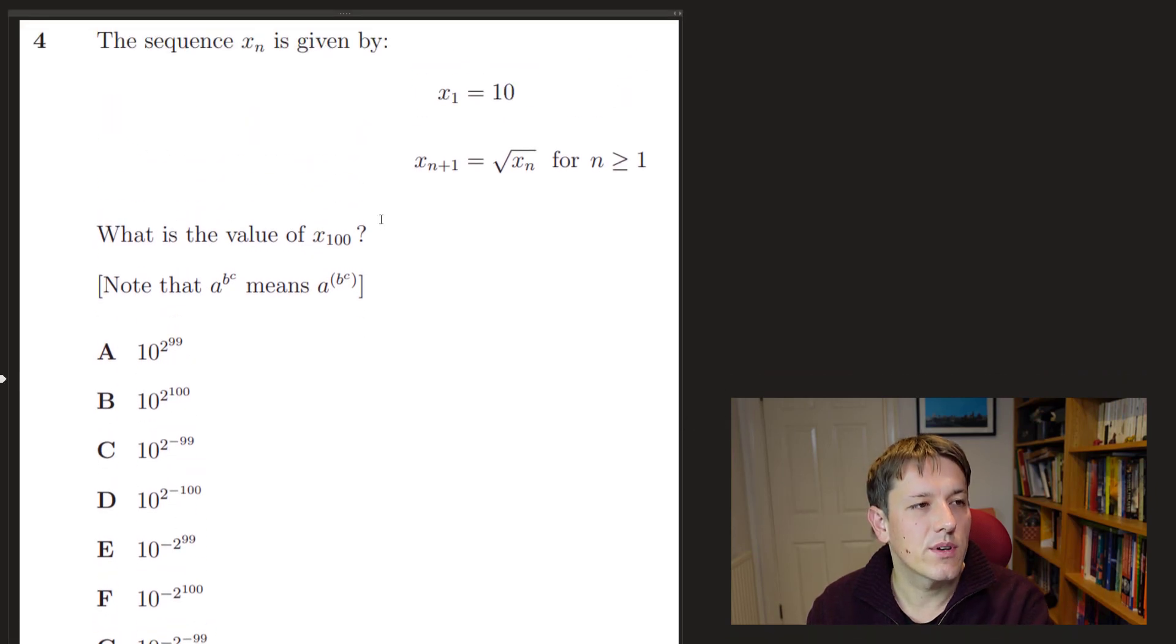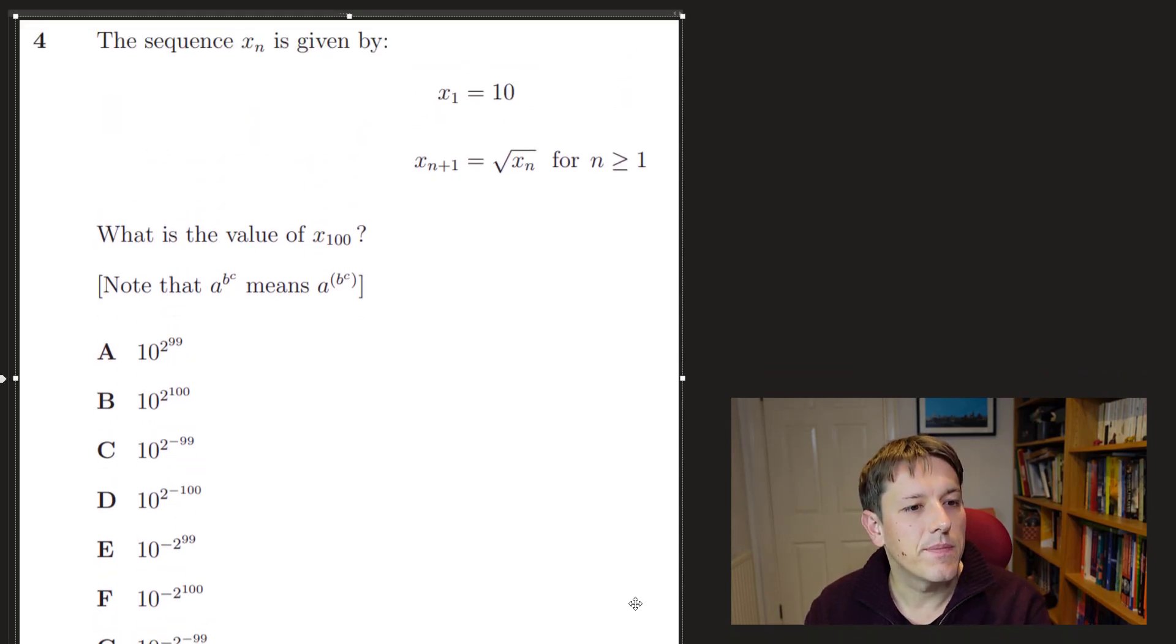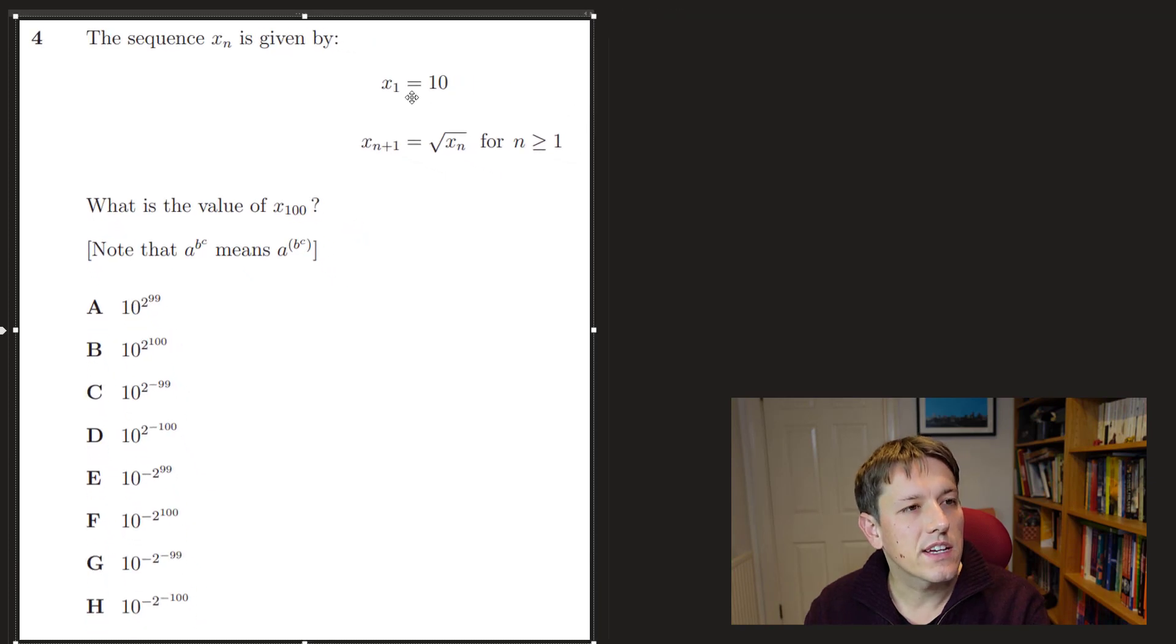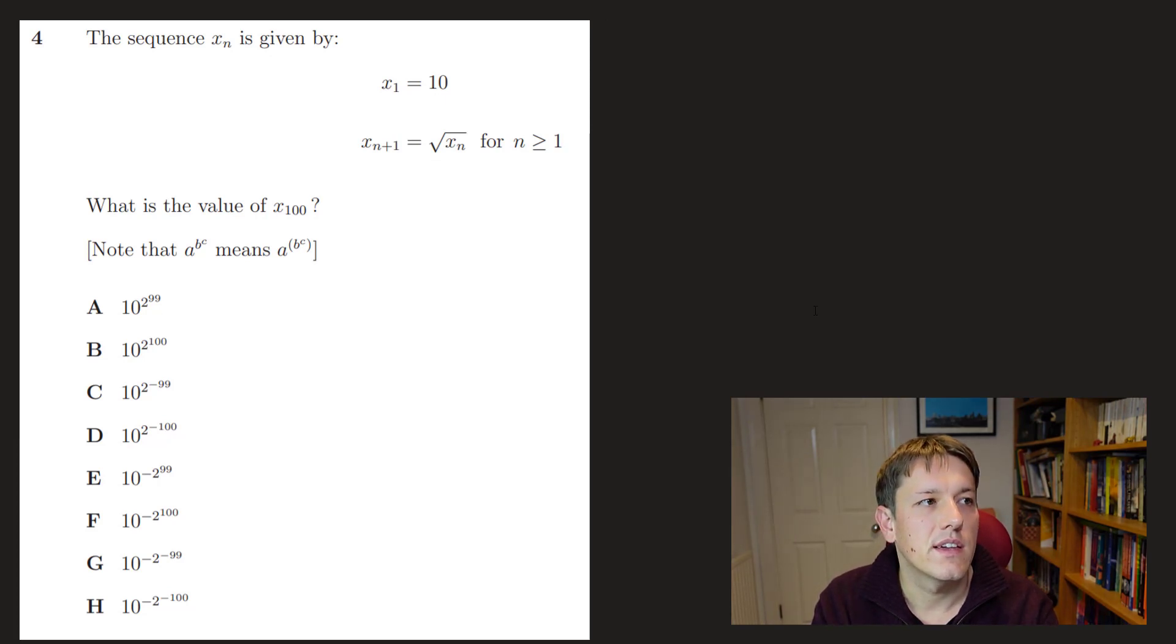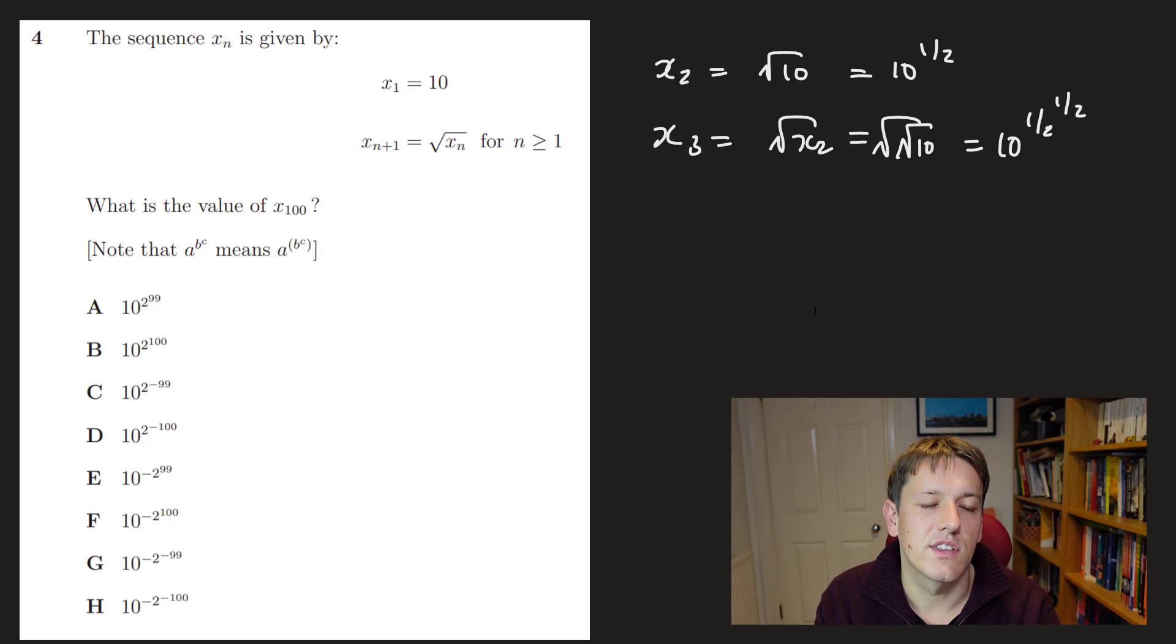In question 4, it says the sequence is given by x₁ = 10 and x_{n+1} is the square root of x_n. So we're going to have here x₂ is the square root of 10, which I could write as 10^(1/2). x₃ is the square root of the square root of the square root of 10 or 10^(1/2) to the 1/2. And so if I get all the way down to x₁₀₀, I'm just going to keep taking these half powers and it's going to be 99 times, because the first half comes with x₂, not with x₁.